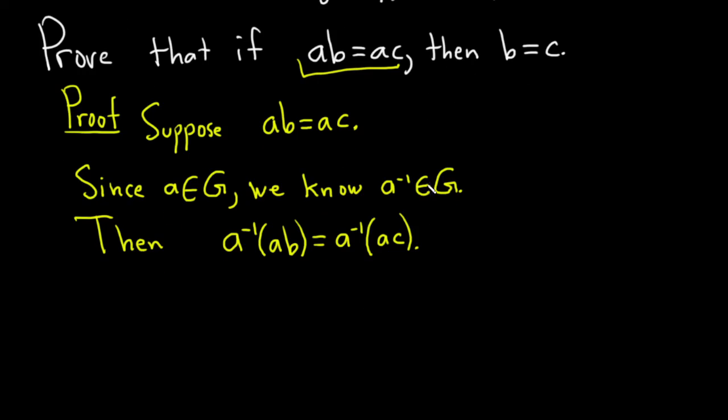So then, let me just say, we can use associativity on the left and on the right and write it as follows: a inverse a times b equals a inverse a times c. And this is by associativity.